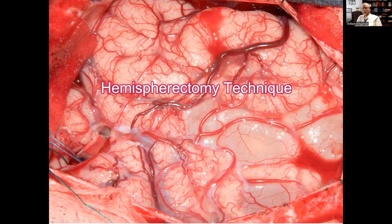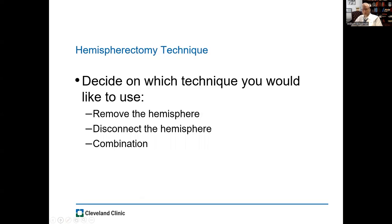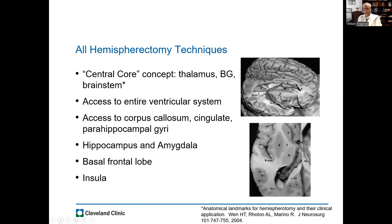As far as techniques go, it's important for the surgeon to decide which technique they're going to use — whether to remove the hemisphere, disconnect it, or do a modification. All hemispherectomy techniques share a central core concept, well described in Wen's paper published in the Journal of Neurosurgery in 2004, which is an excellent anatomic reference. I leave the thalamus, basal ganglia, and brain stem ipsilaterally intact, although there are surgeons who describe a transthalamic hemispherectomy.